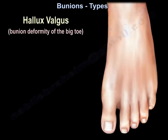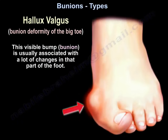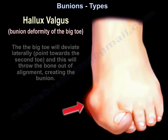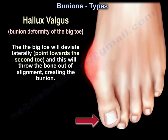Hallux valgus is a common deformity and there are a lot of misconceptions about it. People sometimes describe it as a bump on the side of the big toe. This visible bump or bunion is usually associated with a lot of changes in that part of the foot. The big toe will deviate laterally, meaning it points towards the second toe, and that will throw the bone out of alignment, creating the bunion.